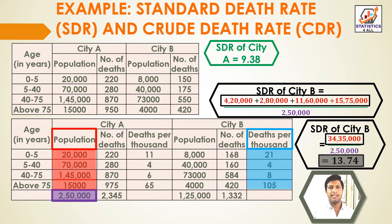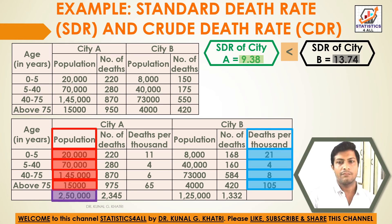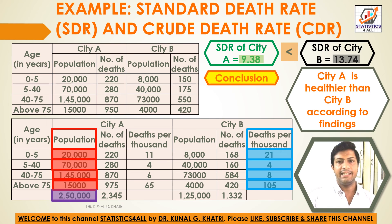So SDR of city A equals 9.38 and SDR of city B equals 13.74. Since SDR of city B is greater than SDR of city A, we conclude that city A is healthier than city B.